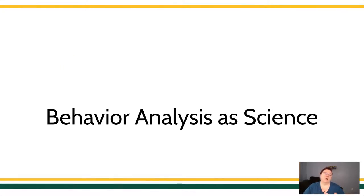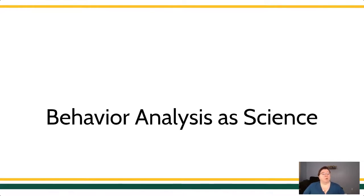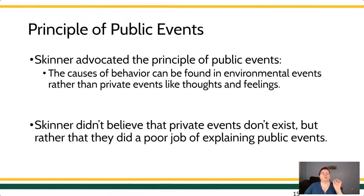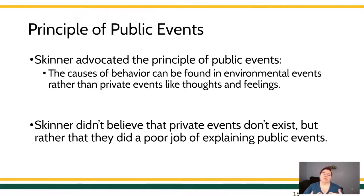That particular opinion gets ascribed to Skinner a lot more than it should. Skinner did not believe that. Skinner was a radical behaviorist — he believed that we have to account for all behavior, even private behavior. What Skinner did say is that private events like thoughts and feelings, while they exist, we still have to explain them. You have to explain where they came from. You have to account for it because ultimately we're deterministic — we believe that things have causes.